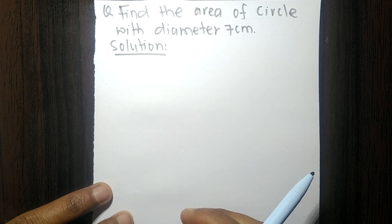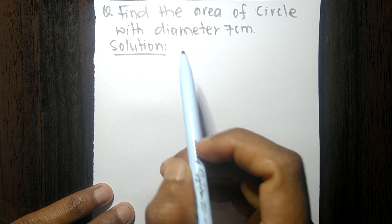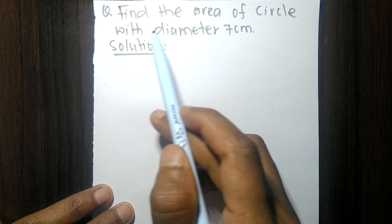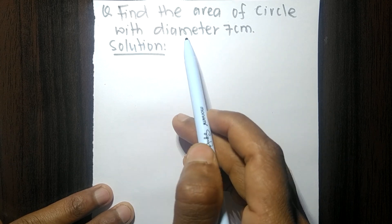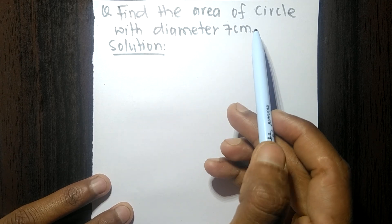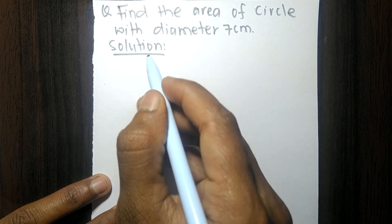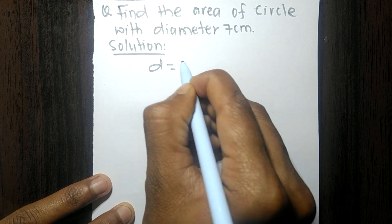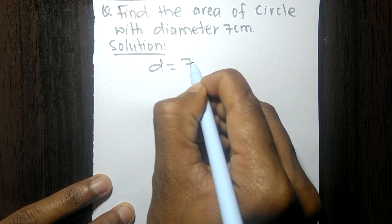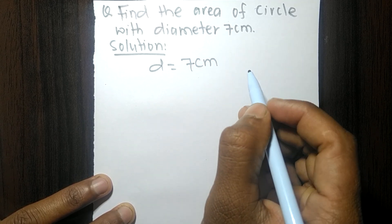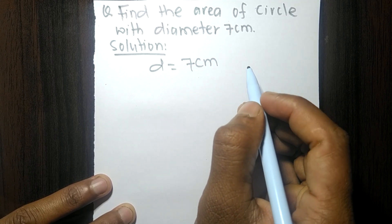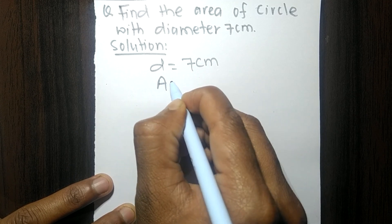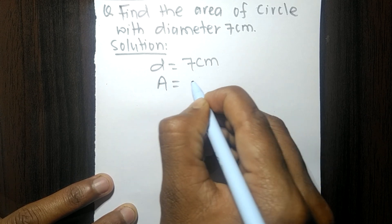Today in this video we have been given: find the area of a circle with diameter 7 centimeters. The diameter of the circle is 7 centimeters, and we have to find out its area.